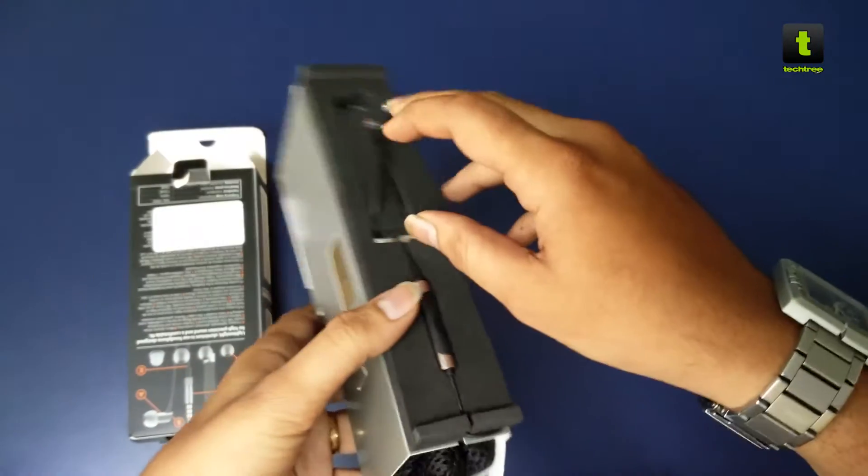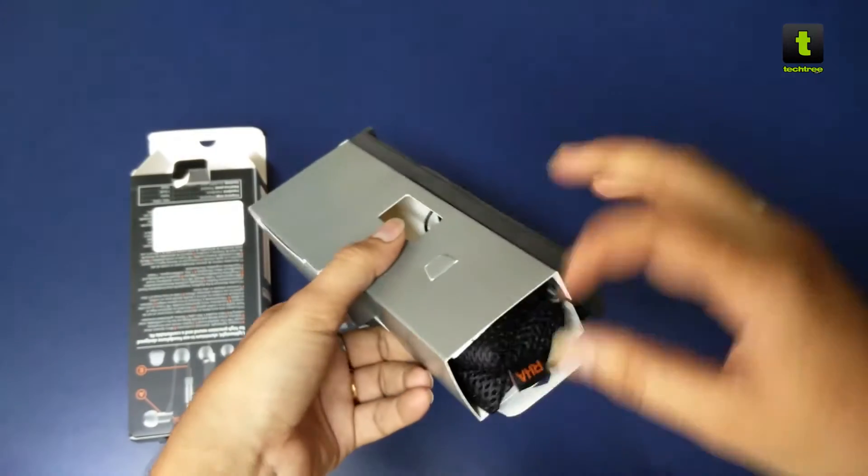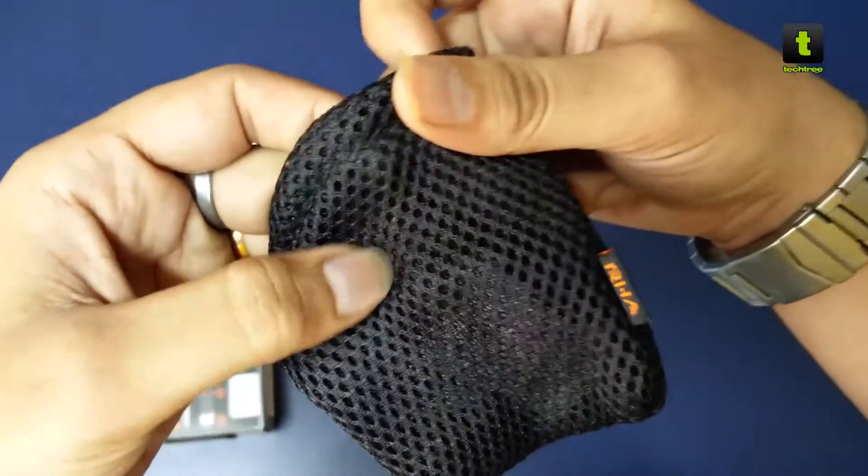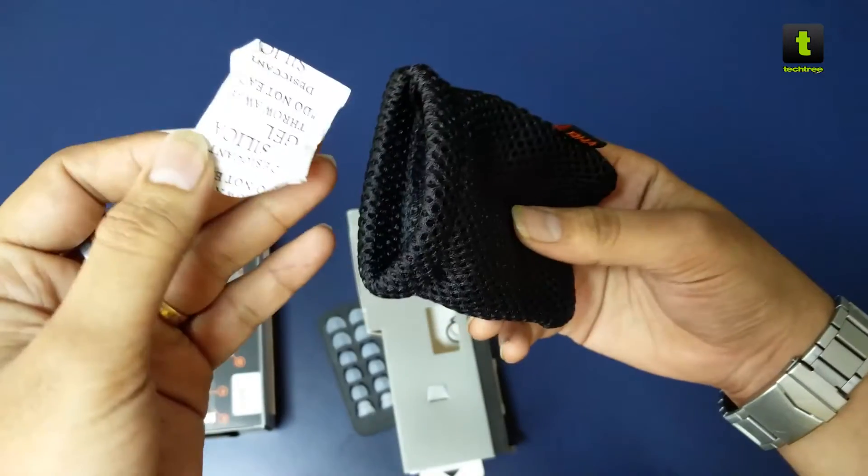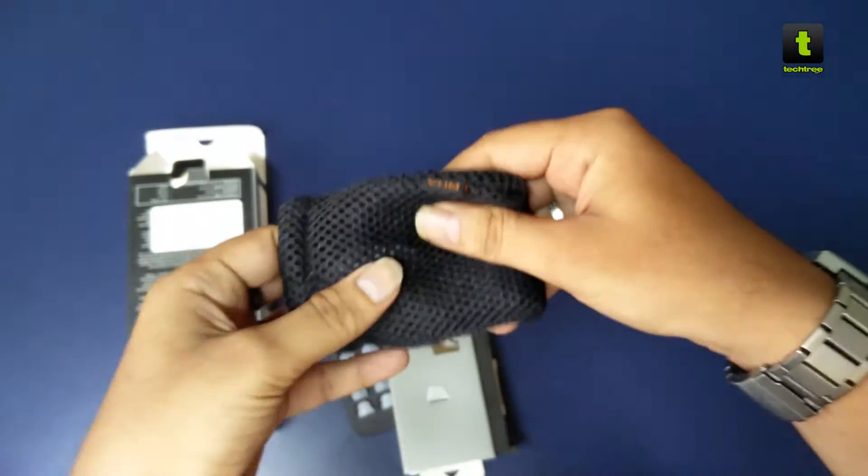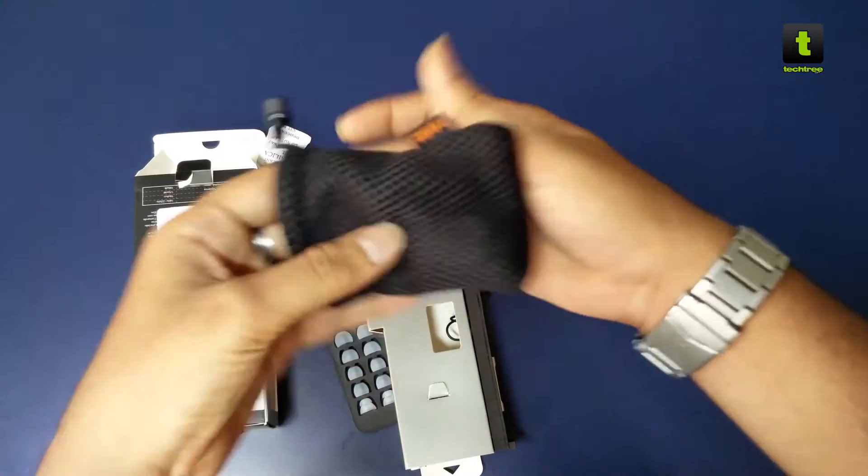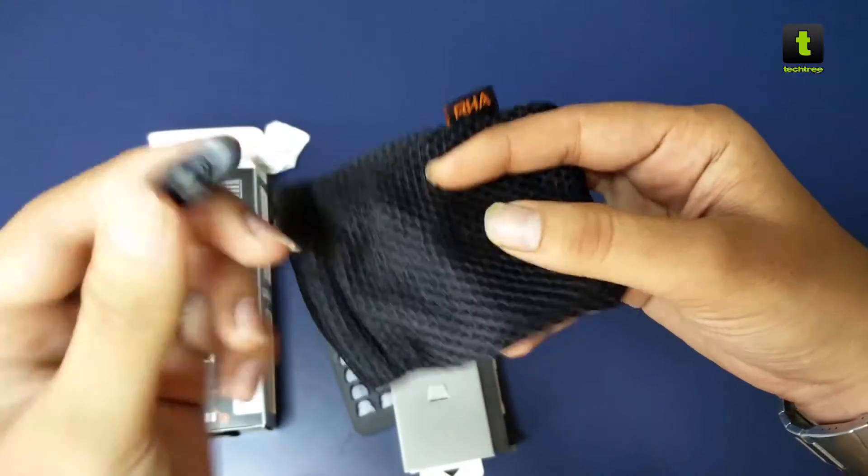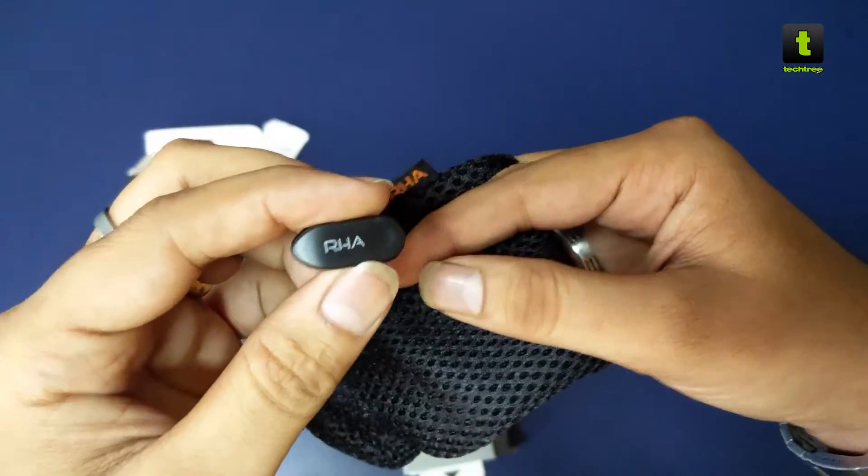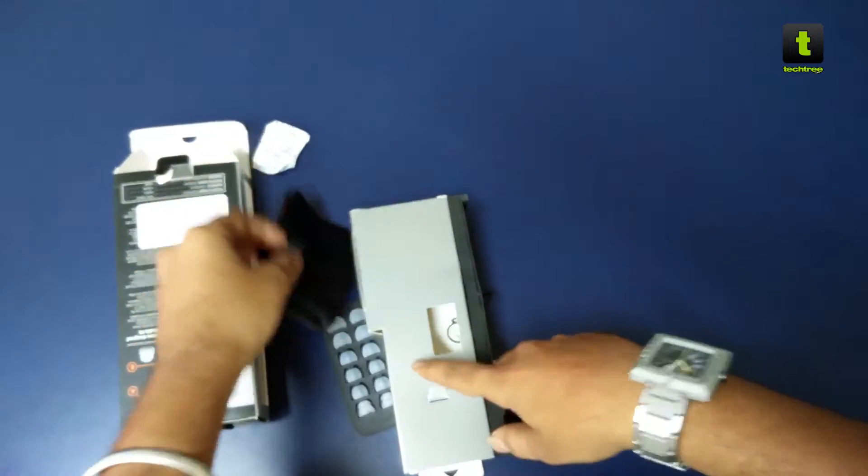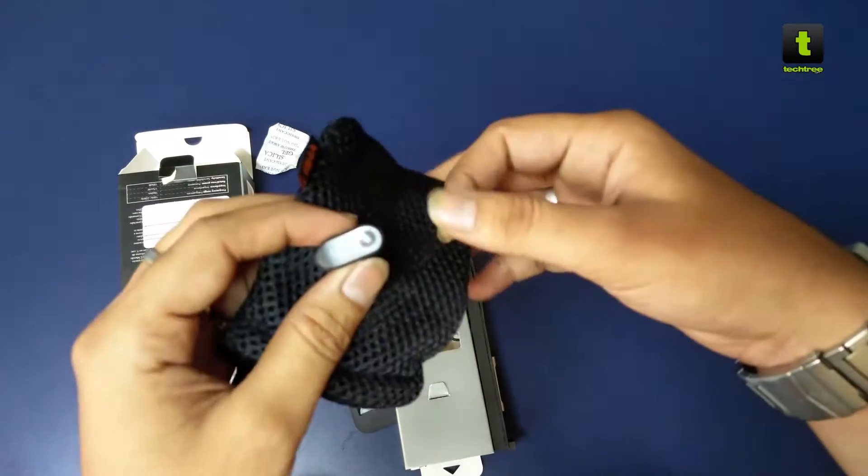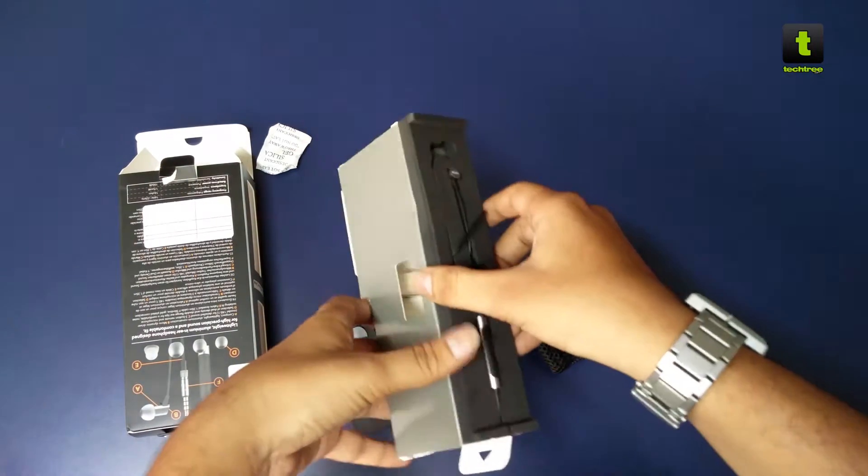We also have a pouch here, it's kind of a mesh pouch to store the devices. We have a silica gel, and here we also have this clip with the beautiful RHA logo on it. It's a must-have so that the wire doesn't get entangled.